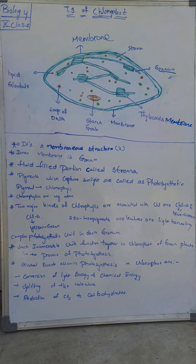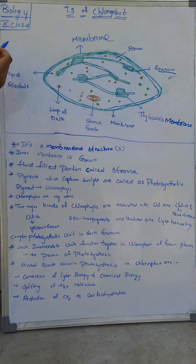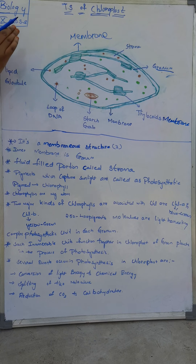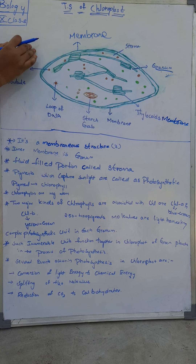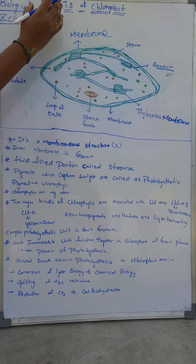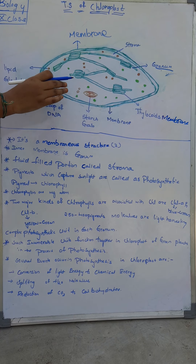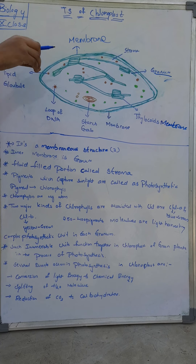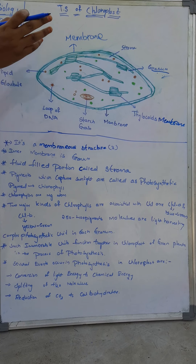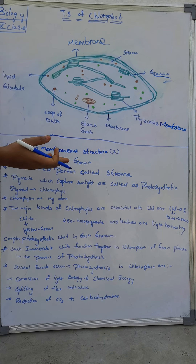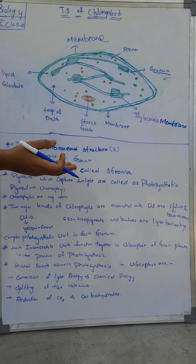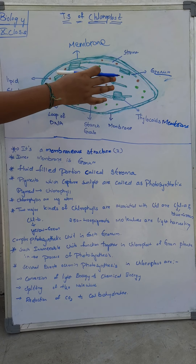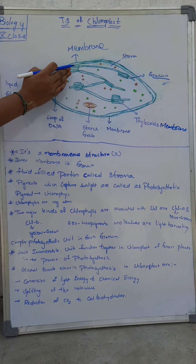Hi guys, welcome back to our channel Productive Works. In the last class we discussed how sunlight is necessary for photosynthesis. Photosynthesis takes place in chlorophyll, and chlorophyll is present in the chloroplast. So what is this chloroplast, and where is photosynthesis happening? It's all happening in the chloroplast.